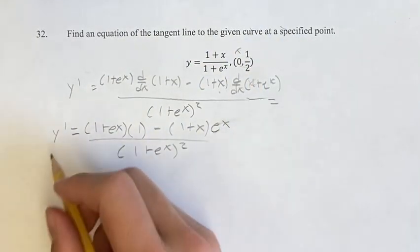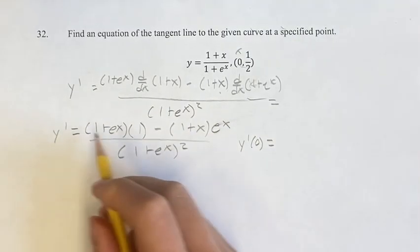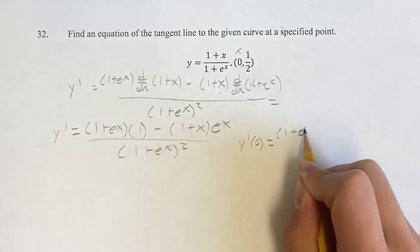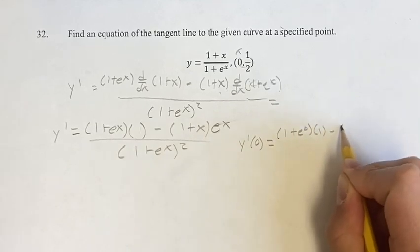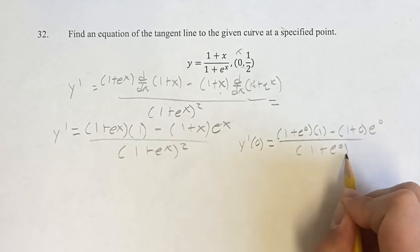So y prime of 0 is equal to 1 plus e^0 times 1 minus 1 plus 0 times e^0 over 1 plus e^0 squared.